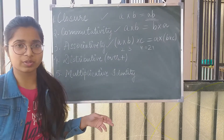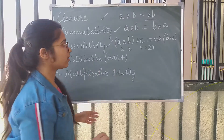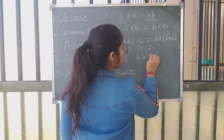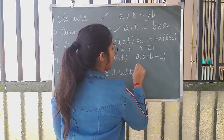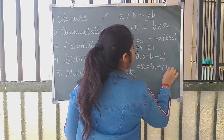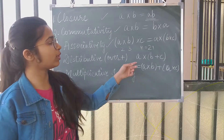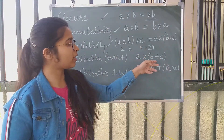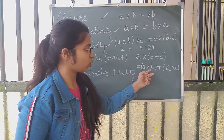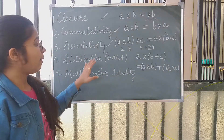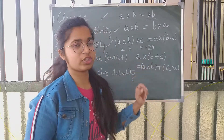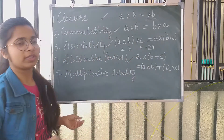Next is an important property: distributivity over addition. That means, if I have three numbers a, b, and c, then multiplying a with the sum of b and c gives the same result as a×b plus a×c. So, if I solve a into (b plus c) — first find b plus c, then multiply by a — I will get the same answer as solving a×b plus a×c. Multiplication distributes over addition. Integers show the distributive property over addition.